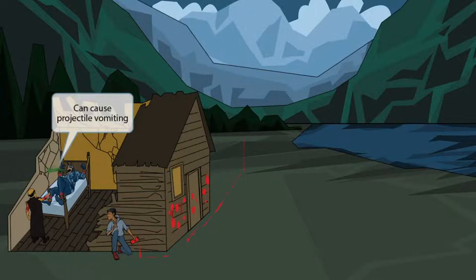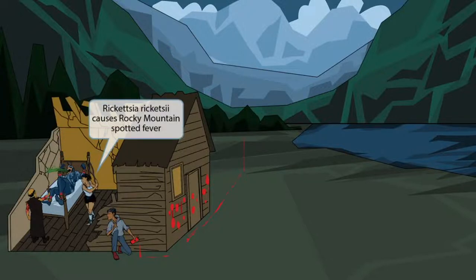Look at that projectile vomiting — it's gross, but it fits well with the whole exorcism idea. This represents the projectile vomiting that occurs with Rocky Mountain spotted fever. Now this woman here is trying to do her part to fight the demon. All she had was her trusty tennis racket, and she's been using it to whack this confused guy all day. This racket stands for Rickettsia rickettsii, the bacteria that causes Rocky Mountain spotted fever.